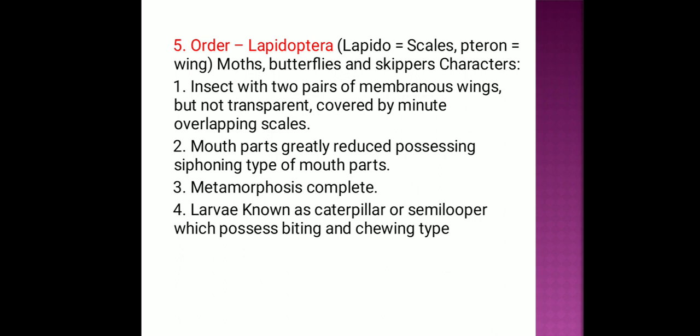Order Lepidoptera: 'Lepido' means scale, 'ptera' means wings. Butterflies and moths are examples of insects in this order. Character features: insects with two pairs of membranous wings — forewings and hindwings. Wings are not transparent, covered by minute overlapping scales. Metamorphosis is complete. Mouthparts are gradually reduced. Larvae known as caterpillars or semi-loopers possess biting and chewing type mouthparts.